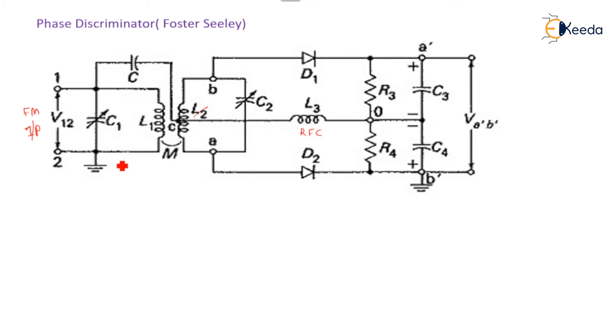Now, here we know the three conditions. F_in equal to F_c. What happens when the input frequency is equal to the center frequency? That time output voltage V0 equals 0.